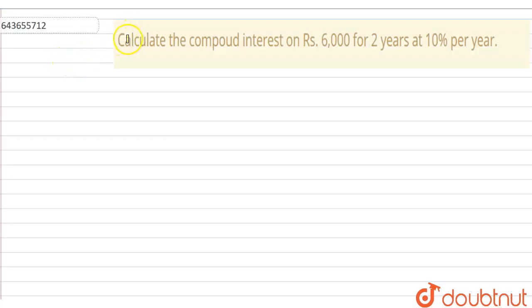Hello everyone. The sum is calculate the compound interest on rupees 6000 for 2 years at 10% per year. In this sum we have to find the compound interest on rupees 6000 for 2 years at 10% per annum.